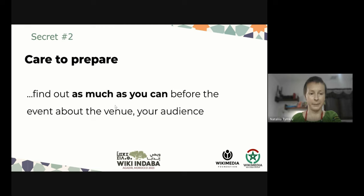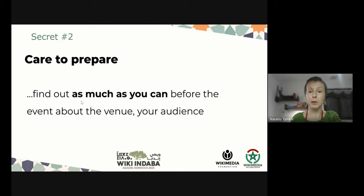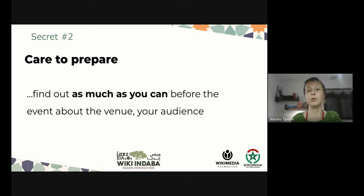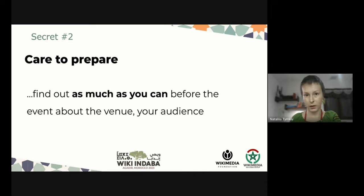Secret two: care to prepare. Find out as much as you can before the event about the venue, your audience, and all the things that you might need in order to prepare for your event better. For example, you may have an agreement that the venue is going to be available from a certain period of time, but internal procedures may allow you to enter only together with your participants. That might prevent you from preparing things in advance — for example, putting refreshments, candies, cookies, or water on the table before participants arrive.